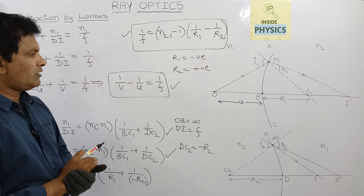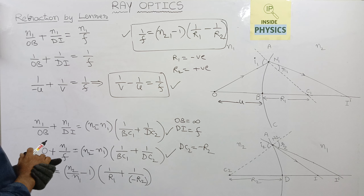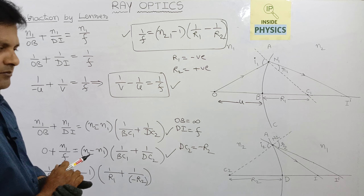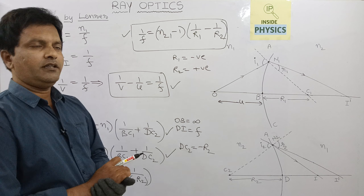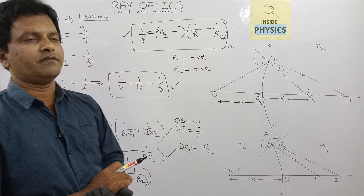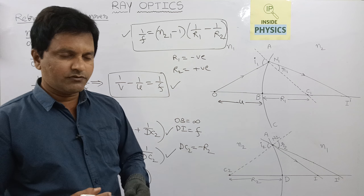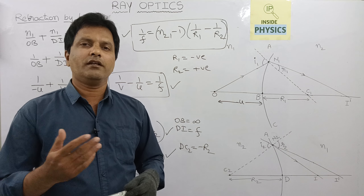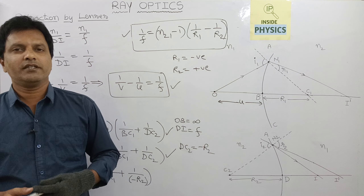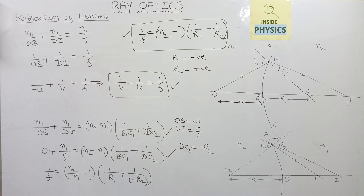So this is how we develop the theory and derive the lens maker's formula and the lens formula, using the relation taken from refraction at a curved surface. That is all for now. In the next classes we will look at some other theories in ray optics. Thank you.